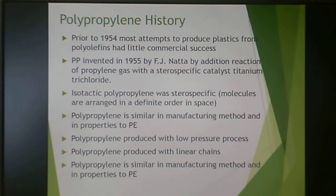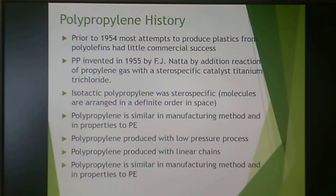Primarily isotactic polypropylene is what is produced commercially. It has similar manufacturing to high-density polyethylene — polypropylene is produced by a low-pressure process similar to high-density polyethylene.